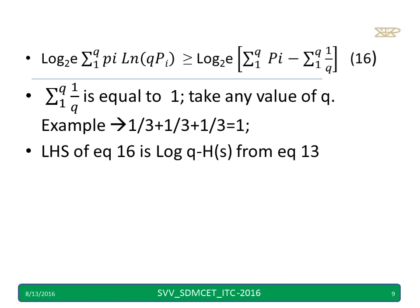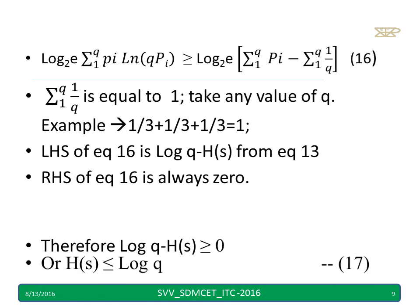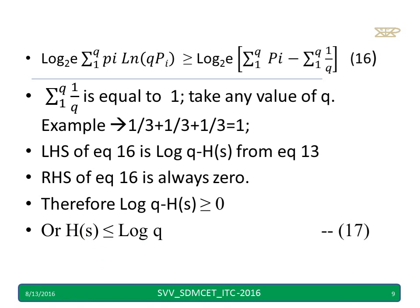Now let us compare the left hand side of equation number 16 with equation number 13. I can say this LHS of 16 is log q minus H of s. RHS of equation 16 is always 0 because summation pi is 1 minus summation 1 to q, 1 by q is also 1. 1 minus 1 is 0. 0 into something is 0. Therefore I can say log q minus H of s is greater than or equal to 0.